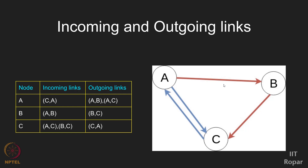Before starting, I would ask you to assume that this is a social network of people liking each other. You can consider this as data collected about your family and friends. The nodes are the people, and if person A likes person B, we will have a directed edge from A to B. This is how the network has been constructed.